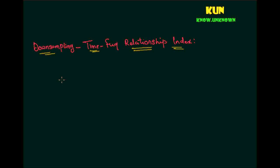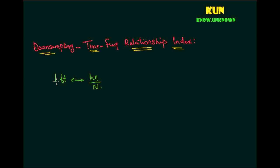Welcome back. In this video, we are going to discuss what happens to the time-frequency indexing when we do down sampling. In the previous video, we had seen the relationship that f times t, which is in the analog domain, maps equivalently to the digital domain as k times n by capital N. This was the main fundamental relationship we established.